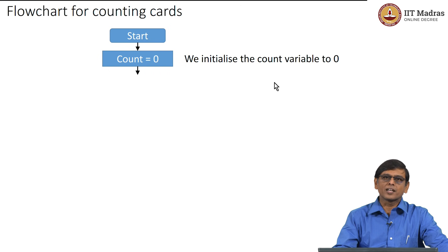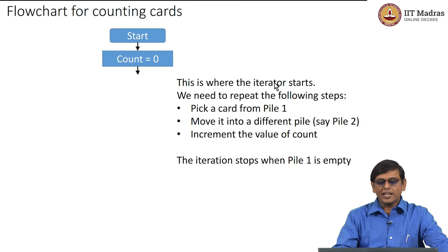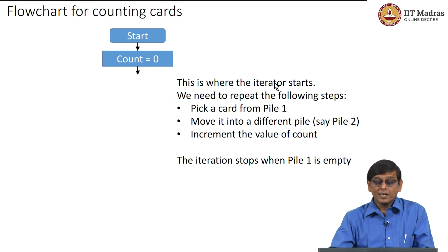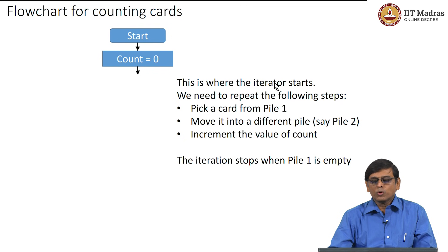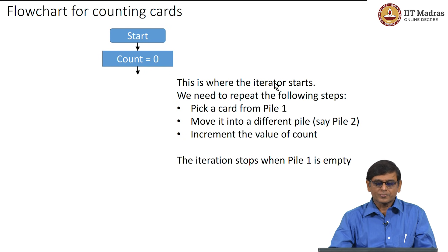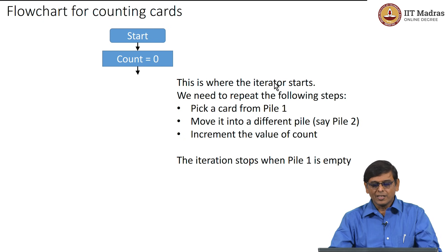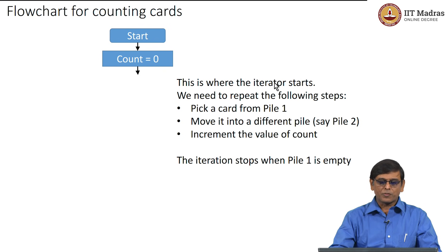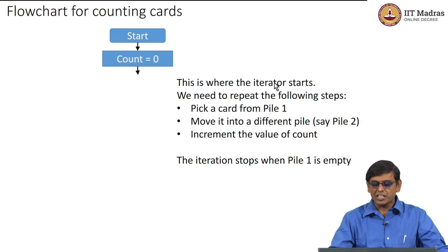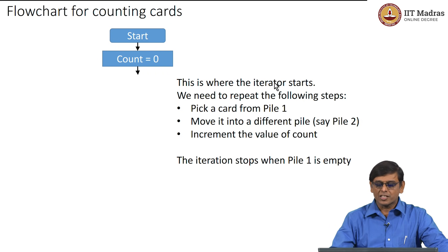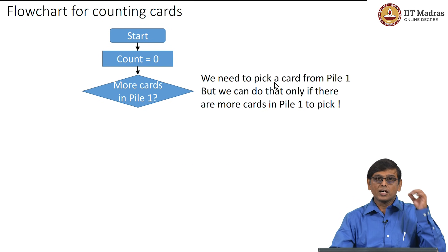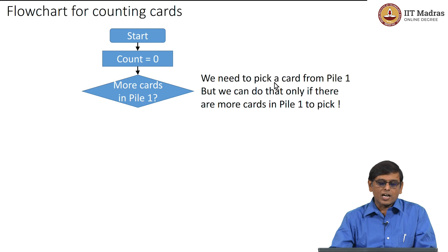Then again there is an arrow indicating the program moves to the next step, where the iteration is supposed to start. The iterator will repeat the following steps: pick a card from pile 1, move this card into pile 2 so the same card is not visited again, increment the value of count, and keep repeating until pile 1 is empty. We start the iterator with a condition check. The condition we are checking is: are there any more cards in pile 1?